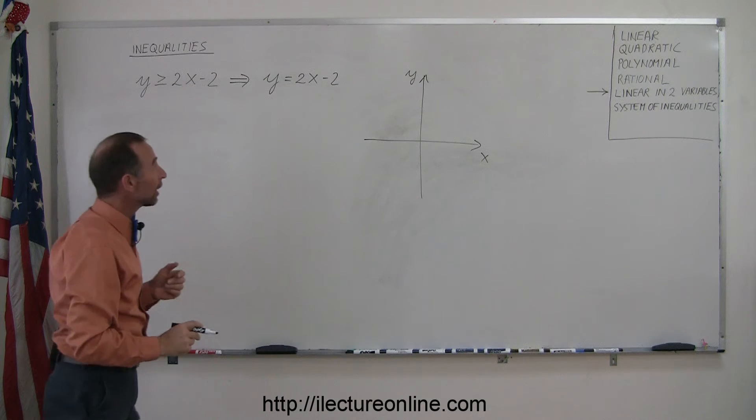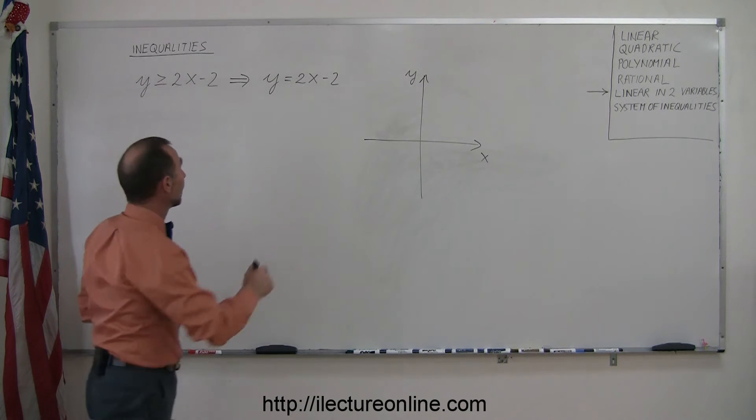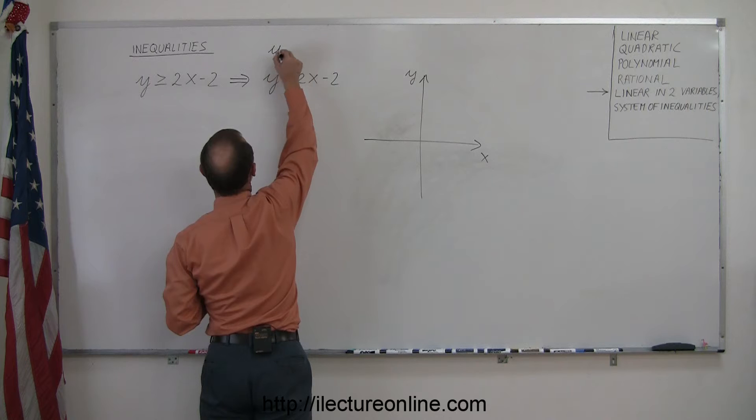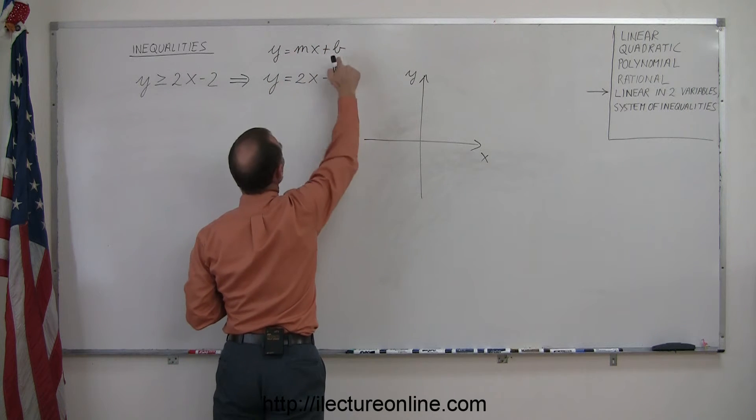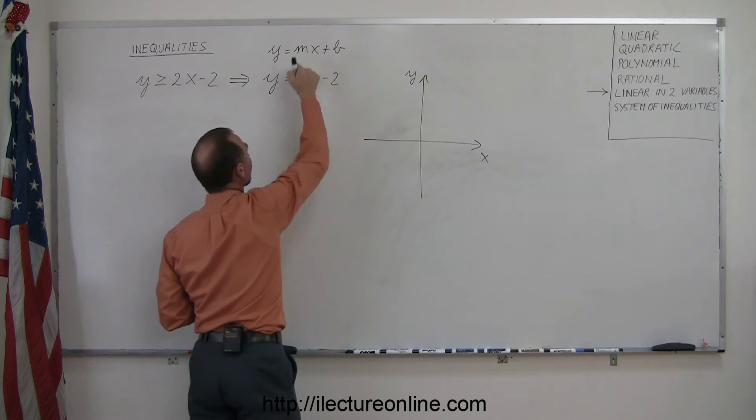At this point, you should realize that is a straight line. According to the equation y = mx + b, where -2 is the y-intercept and 2 is the slope of the line.